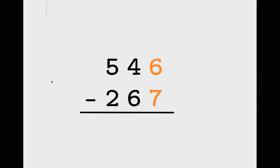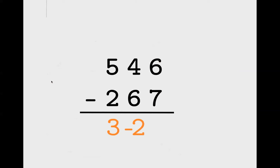Second lie: you can't take 7 from 6. But we know what 6 minus 7 is — it's negative one. So what if we just let negatives happen? For 546 minus 267: 500 minus 200 is 300; 40 minus 60 is negative 20; 6 minus 7 is negative 1. That gives 300 minus 20 minus 1. 300 minus 20 is 280, take away one more is 279. Go do it the old-fashioned way and you'll get the same answer. Once you practice this a few times you can do it entirely in your head.